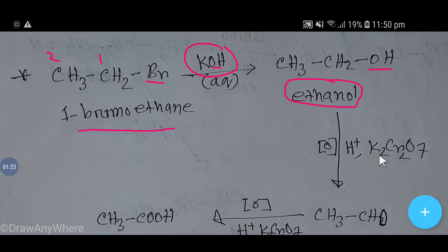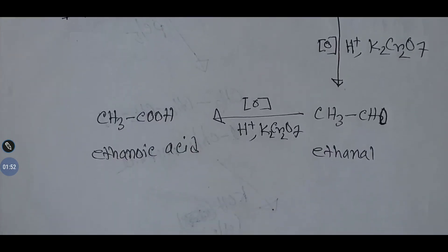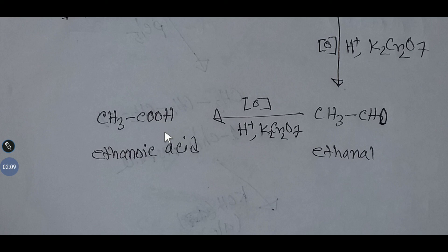Now, if you oxidize this ethanol using sulfuric acid and potassium dichromate, we first get the aldehyde, which is ethanal. If you then oxidize ethanal further using the same reagents — sulfuric acid and potassium dichromate — you will get ethanoic acid. So now you can convert 1-bromoethane to ethanoic acid.